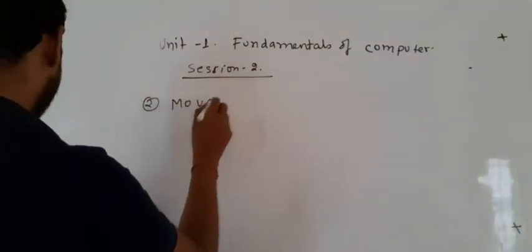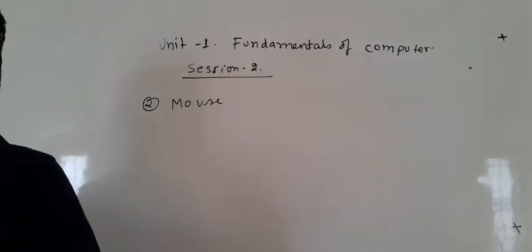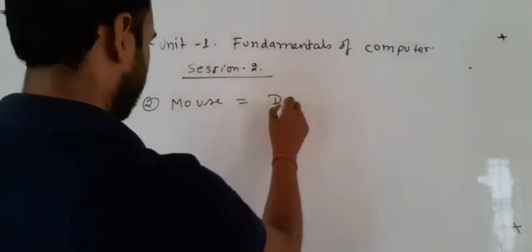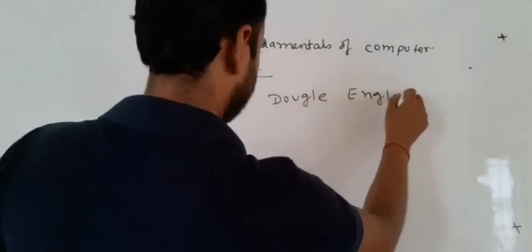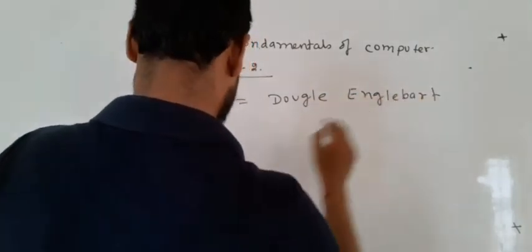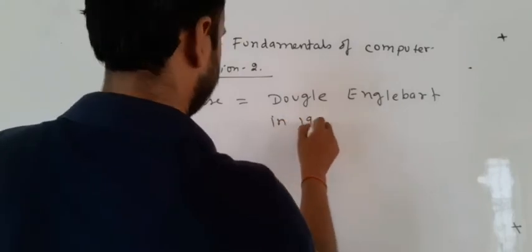Second input device is mouse. Mouse was invented by Douglas Engelbert in 1963.